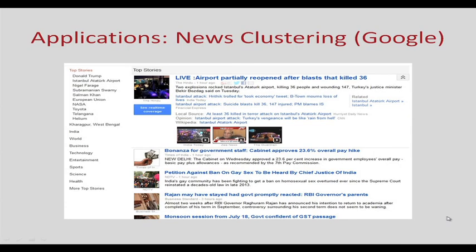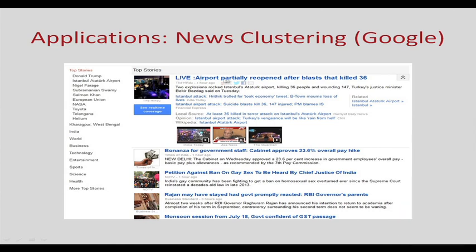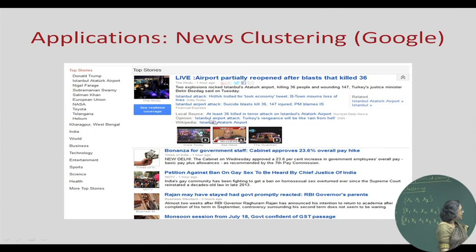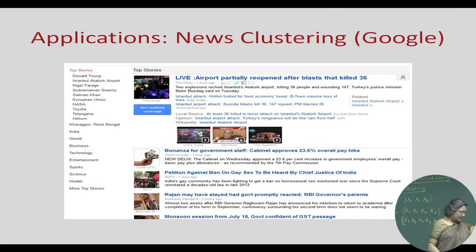Let us look at an application of news clustering. Some of you will have used Google News. In Google News, different news stories are grouped together. For example, one news story is about the bombing of Istanbul airport on 29th June 2016, and the related news stories under that are grouped together. This is unsupervised clustering — the news story was not given as a label, but related news items were grouped together. Google News is an example of a system which does news clustering.